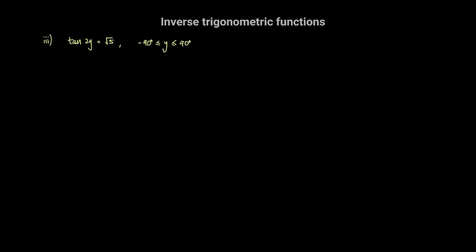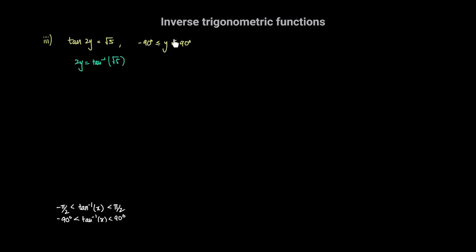The next equation is that tan of 2y is equal to the square root of 5. We want to solve for the angle y between negative 90 degrees and 90 degrees. So we can say that 2y is equal to tan inverse of the square root of 5. This is the inverse tan function, which always returns a value for the angle between negative pi over 2 radians and pi over 2 radians, or negative 90 degrees and 90 degrees. Taking the tan inverse of the square root of 5 with our calculator set to degrees, we get 2y is equal to 65.9 degrees.